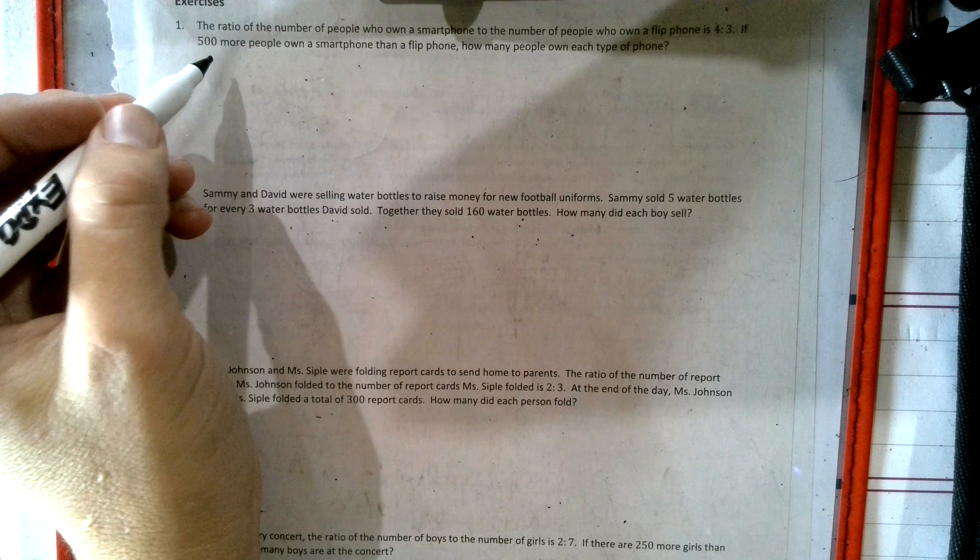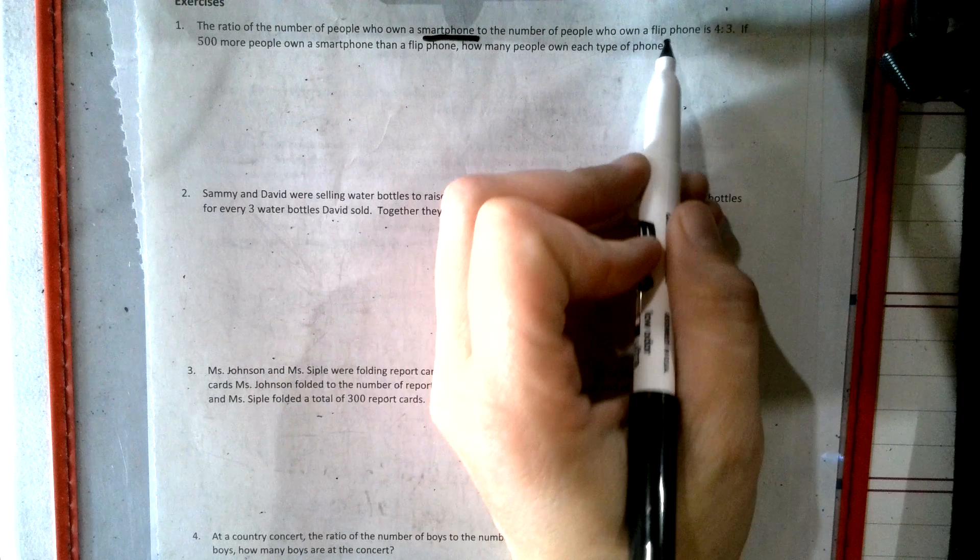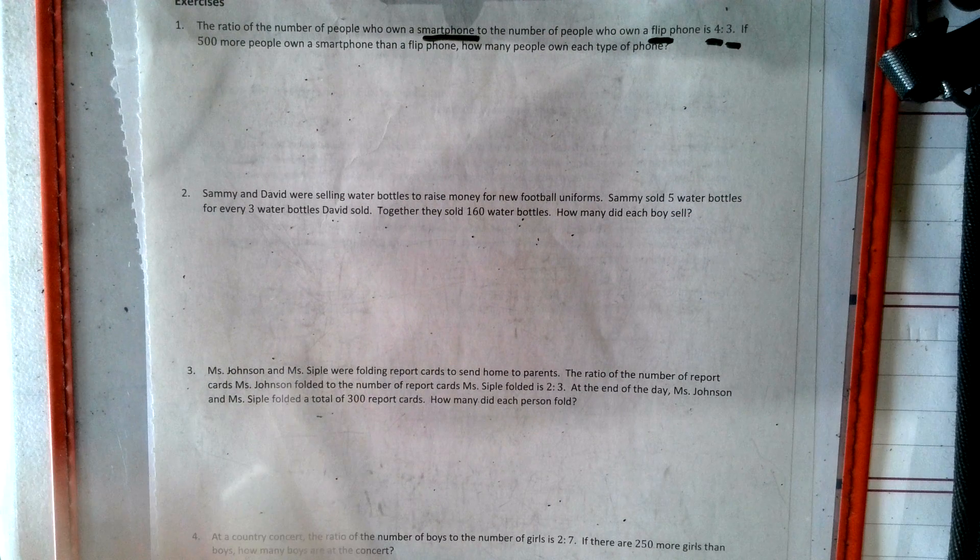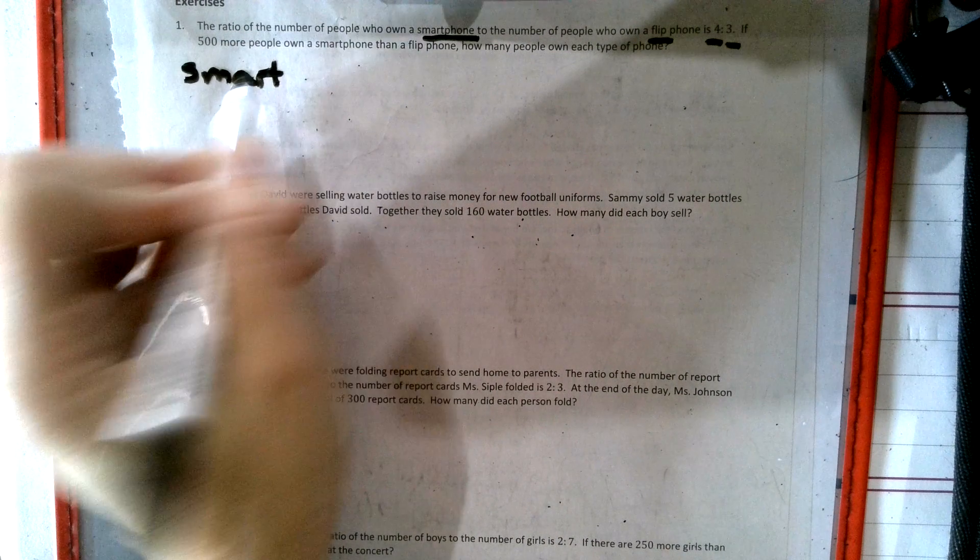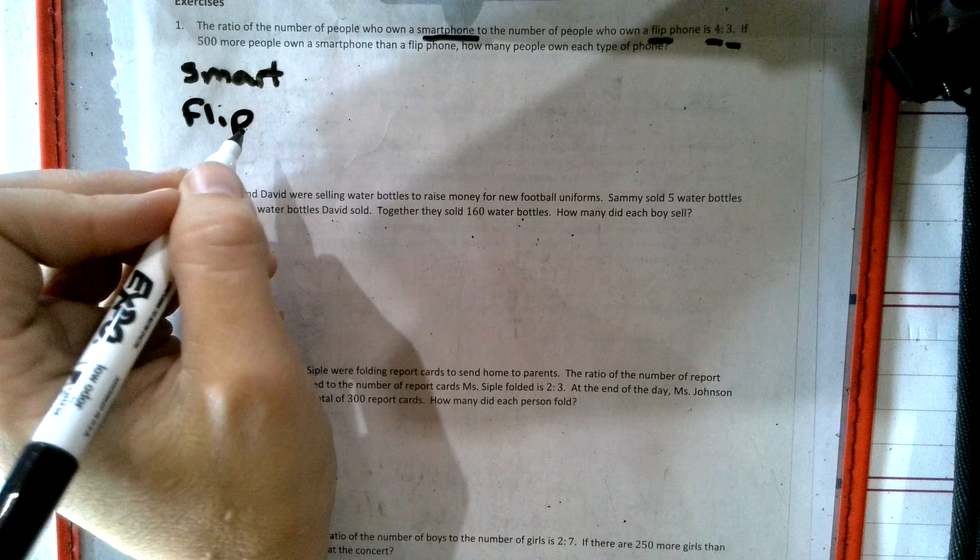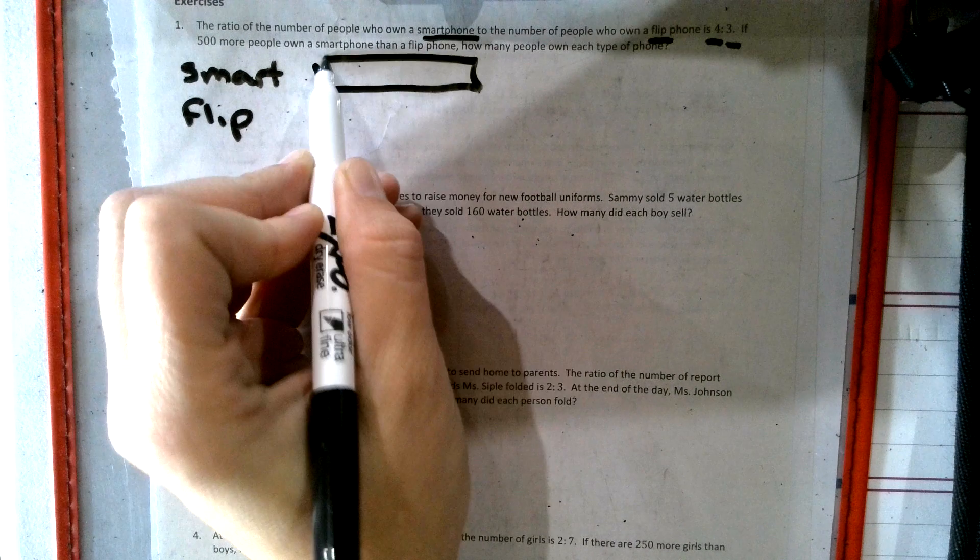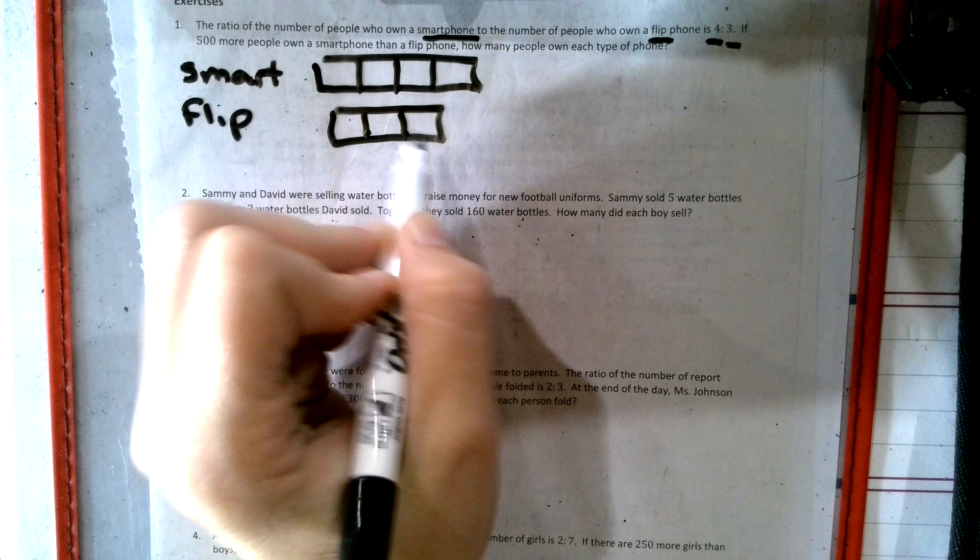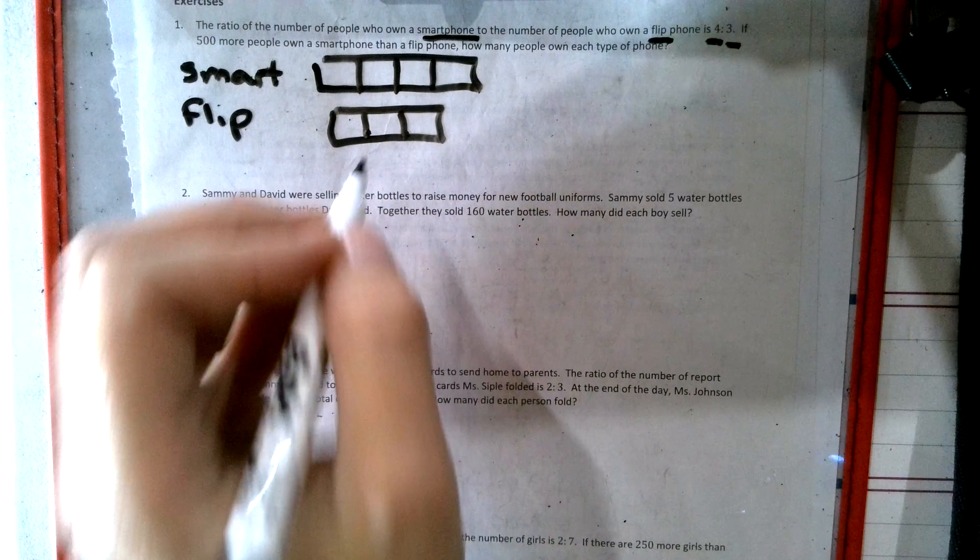It says the ratio of the number of people who own smartphones to the people who own flip phones is four to three. Now the order matters here. So the first kind of phone we wrote about was smartphones. So I'm going to put smart and I'm going to put flip. And it says it's in ratio of four to three. So that means smartphone's going to get four boxes and flip's going to get three.